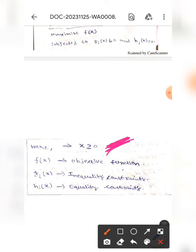Here, f of x is the objective function, whereas gi of x represents inequality constraints. This is the statement of optimization problem.